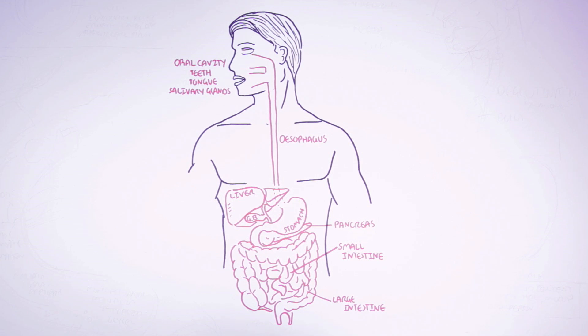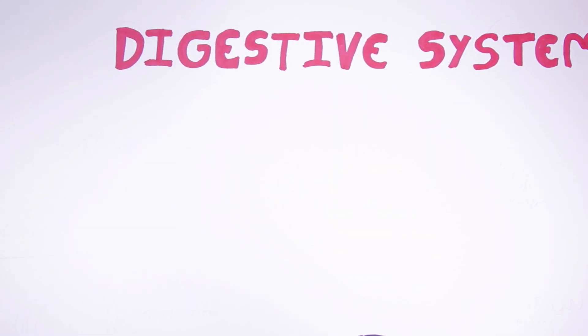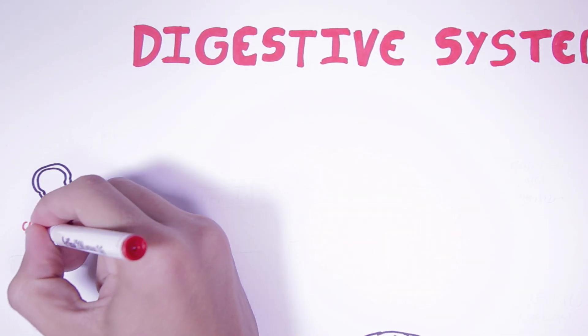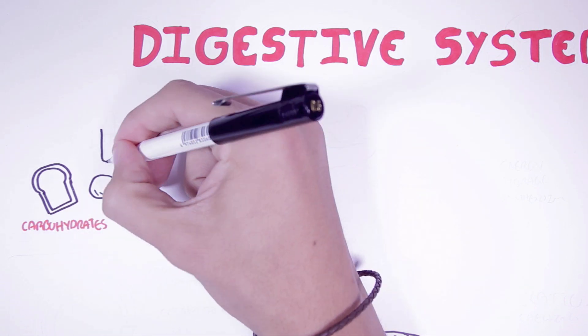Looking at a general overview of the digestive system, food can be grouped into three main categories: carbohydrates such as bread, proteins such as meat, and lipids such as oil.